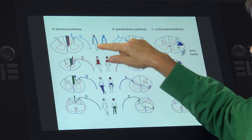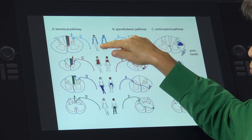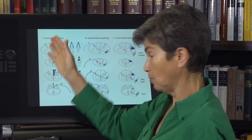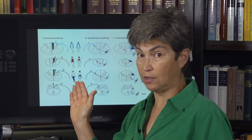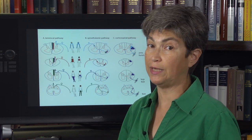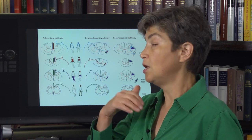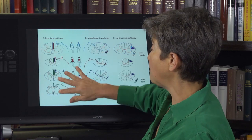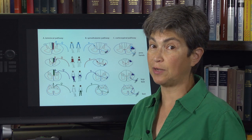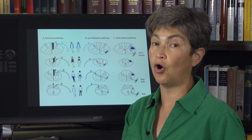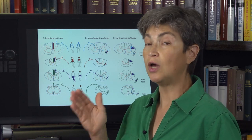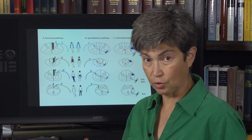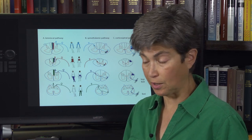Upper trunk and cervical levels — the shoulders, arms, and hands — all come into the more lateral aspect of the dorsal column and form the fasciculus cuneatus. Importantly, this entire pathway — light touch, vibration, proprioception — in the spinal cord is ipsilateral to the parts of the body that it serves. Ipsilateral.